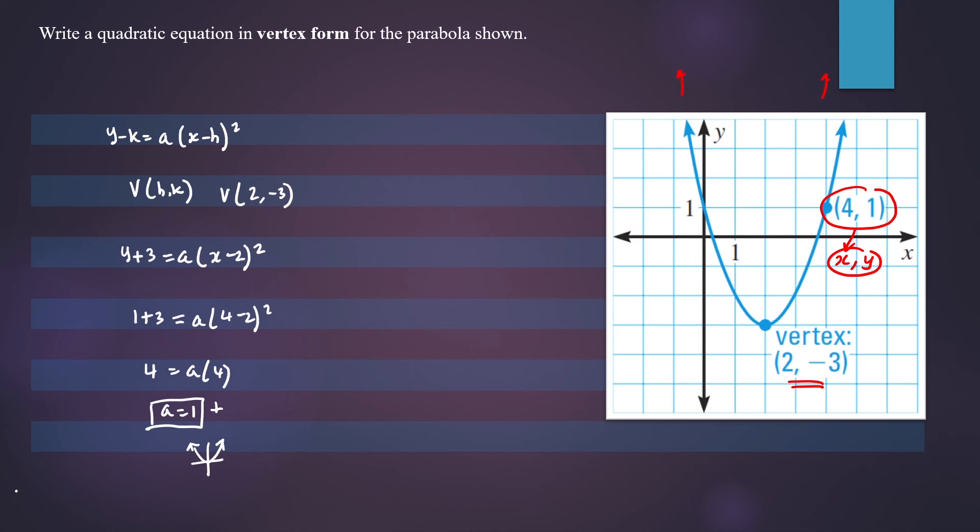So your final equation in vertex form is y plus 3 equals, well a is 1 so we won't write 1 there, and then this is (x minus 2) squared. So this is your final answer. Thanks for watching.